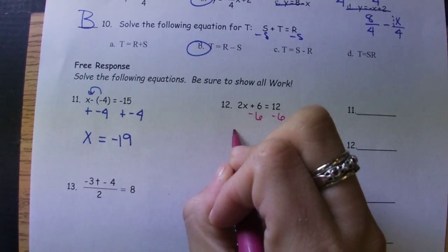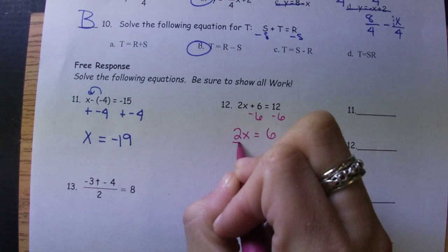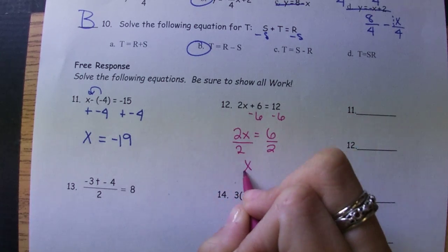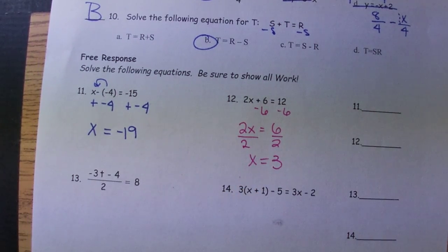Number 12, we always undo addition and subtraction first. Then multiplication and division. So the X equals 3.